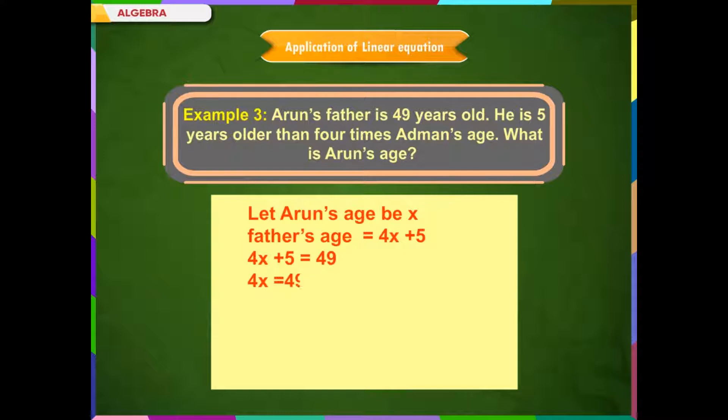4x is equal to 49 minus 4. 4x is equal to 44. x is equal to 44 divided by 4, is equal to 11. Therefore, Arun's age is 11.